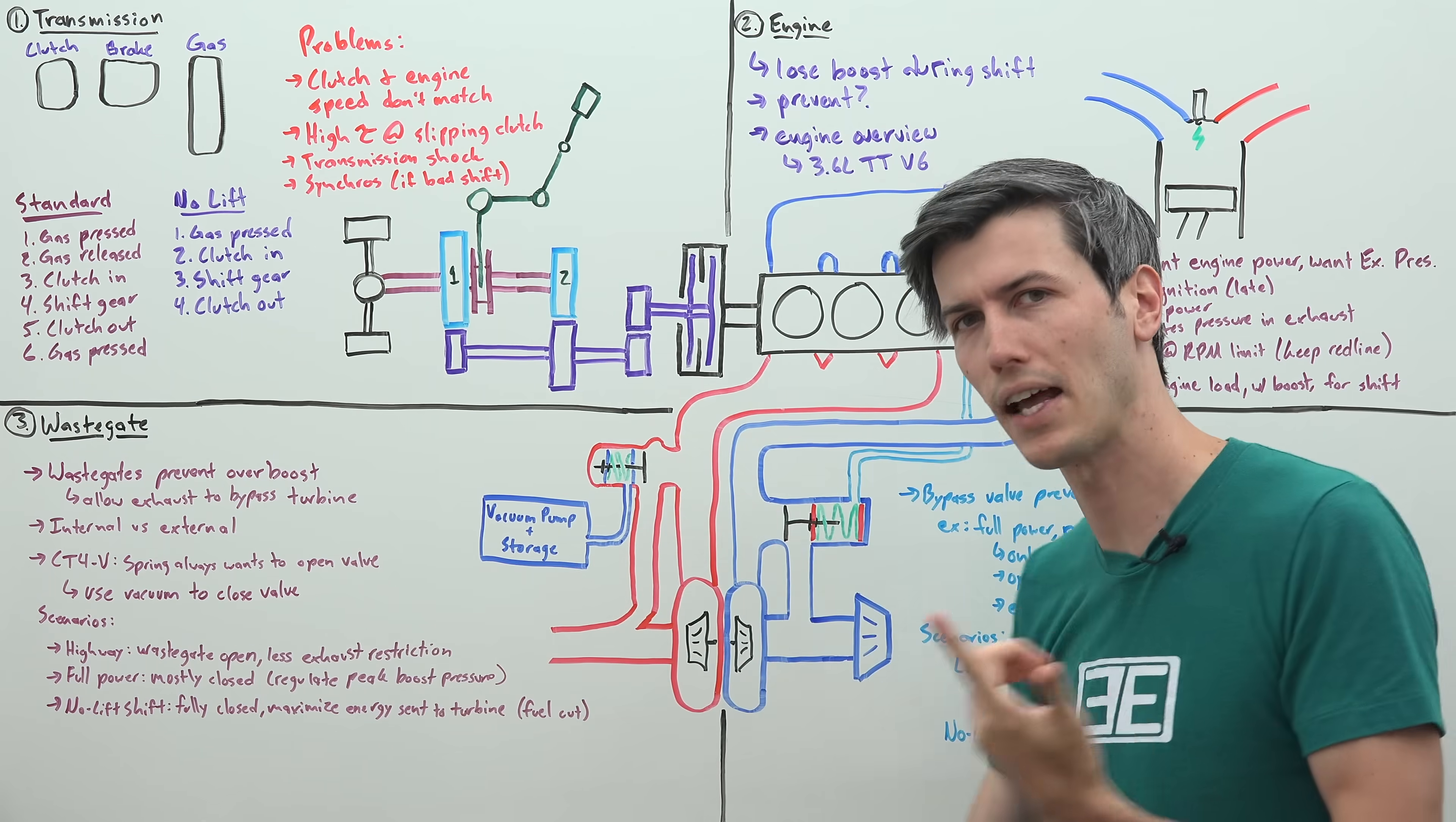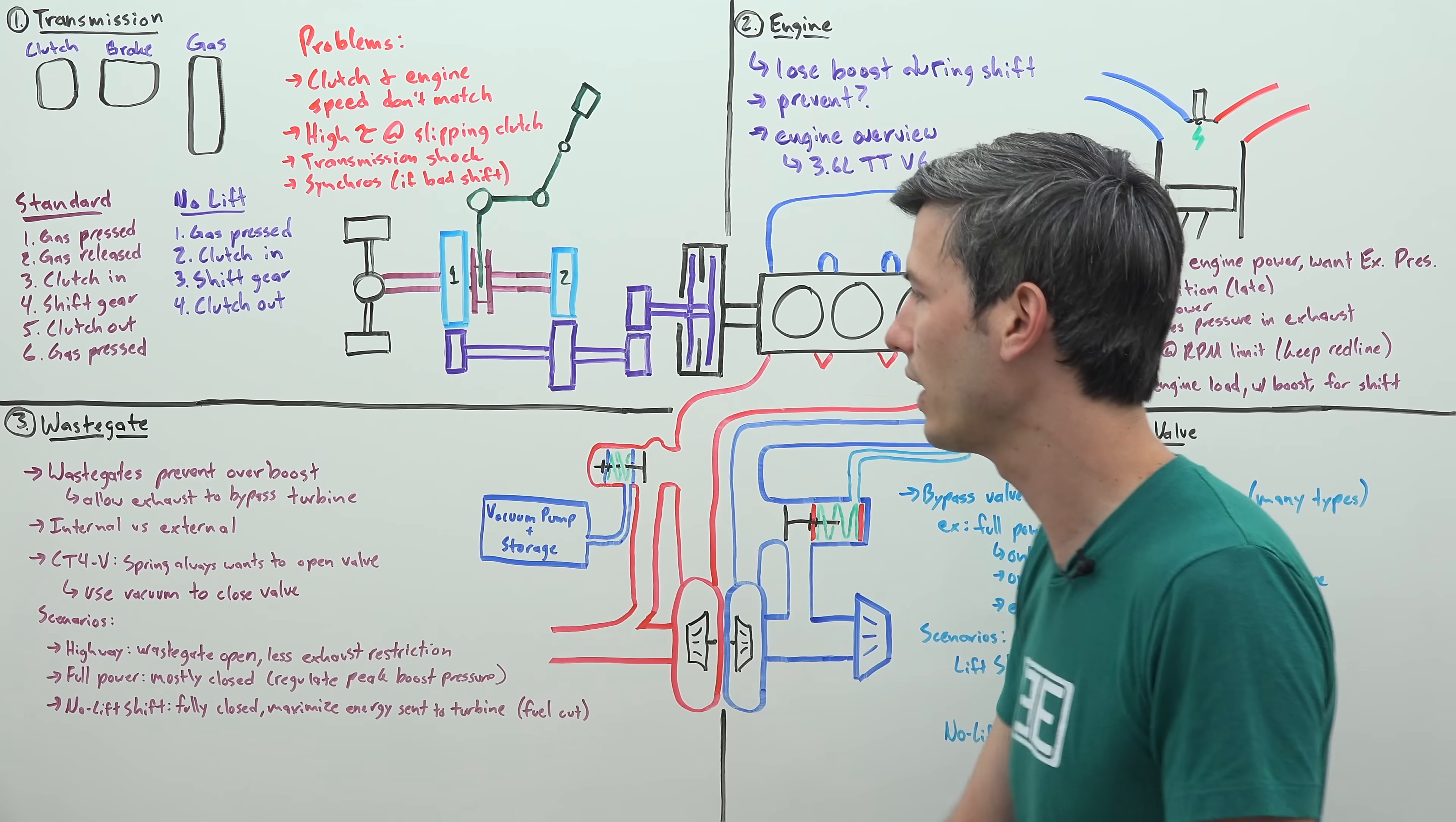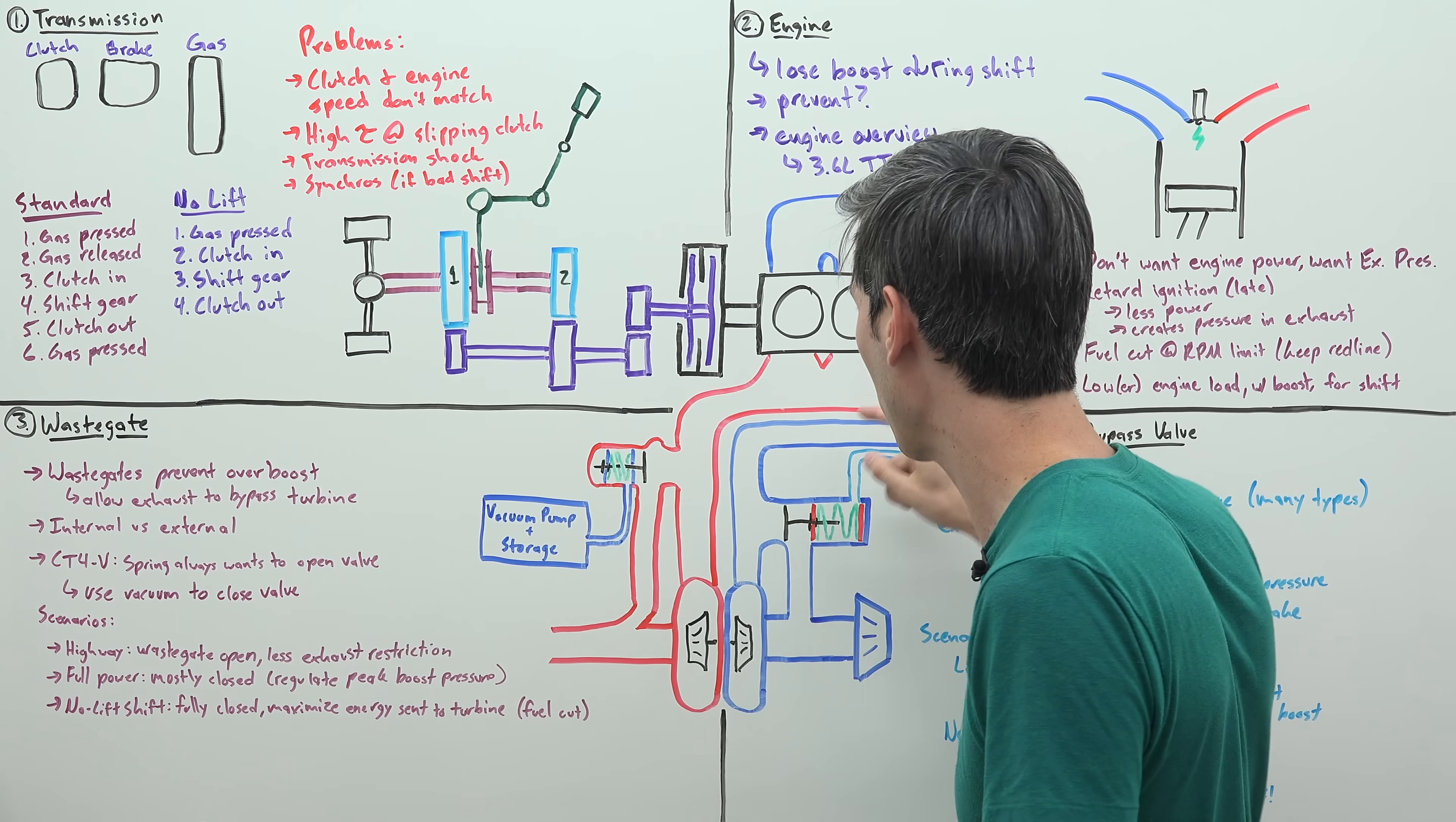Now to optimize this process, not only do we need to look at ignition timing, but we also need to look at our wastegate as well as our bypass valve. And so a wastegate is used to prevent overboost from your engine creating too much boost, making too much power.